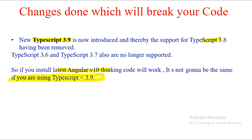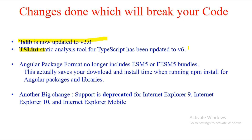Other breaking changes: tslib is updated to version 2, and tslint is updated to version 6 — update your code accordingly. The Angular package format no longer includes esm5 or fesm5 bundles. This is actually beneficial as those packages are excluded from npm install, saving installation time. Also, support for Internet Explorer 9, IE 10, and Internet Explorer Mobile is completely deprecated in Angular 10.